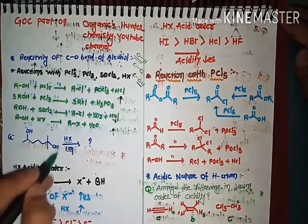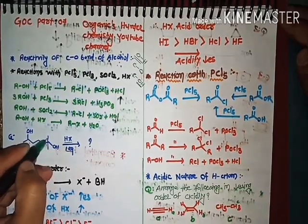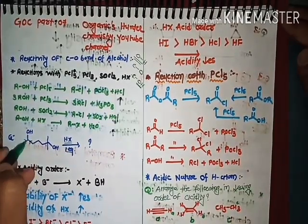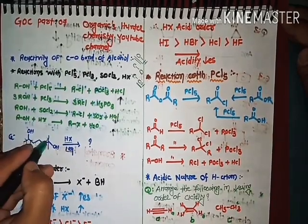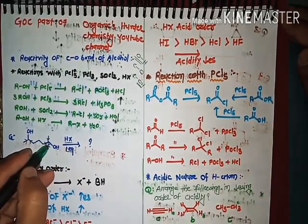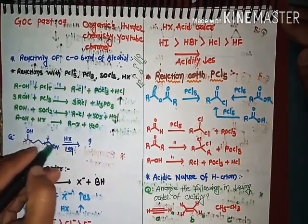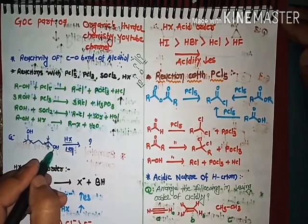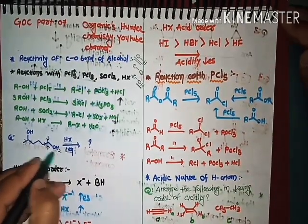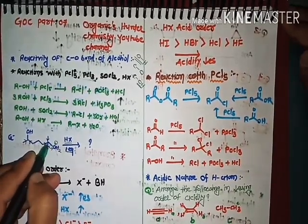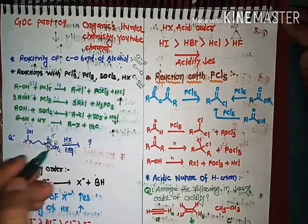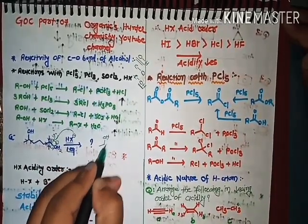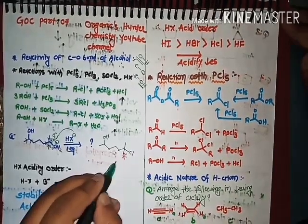The reaction will occur at the OH bond. The OH with three alkyl groups is tertiary, and the other OH has two alkyl groups. Two alkyl groups will push electrons, so a tertiary carbocation is generated, which is very stable. Then X minus attacks the tertiary carbocation and gives the product.